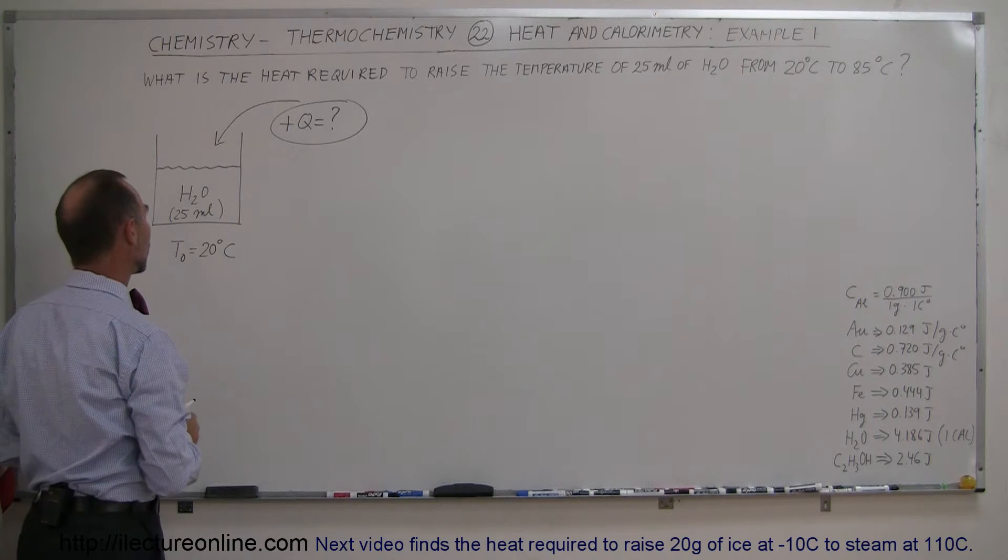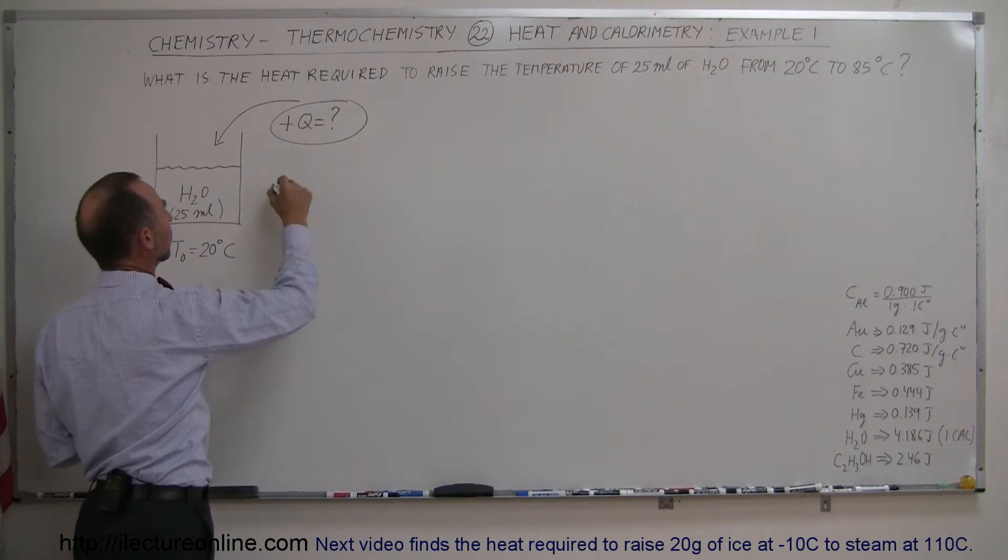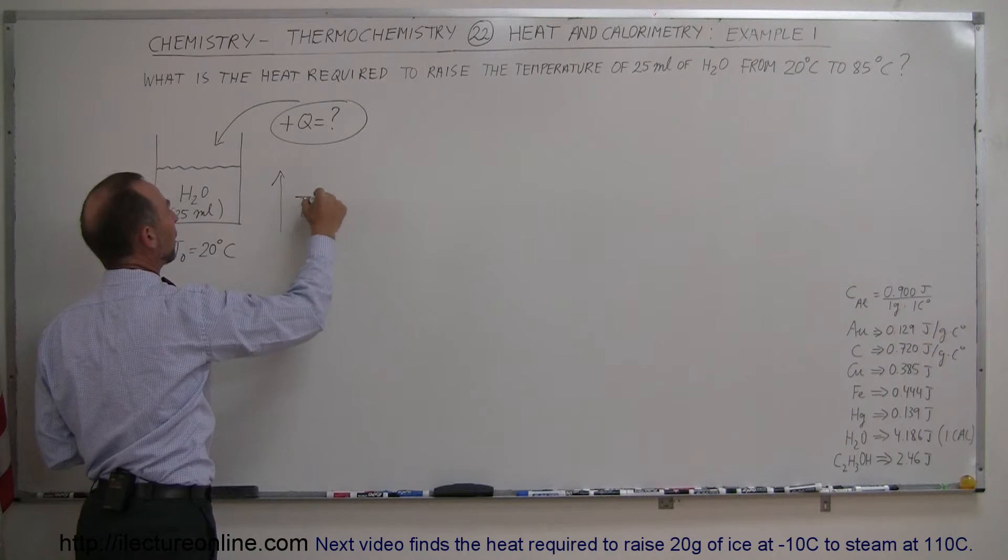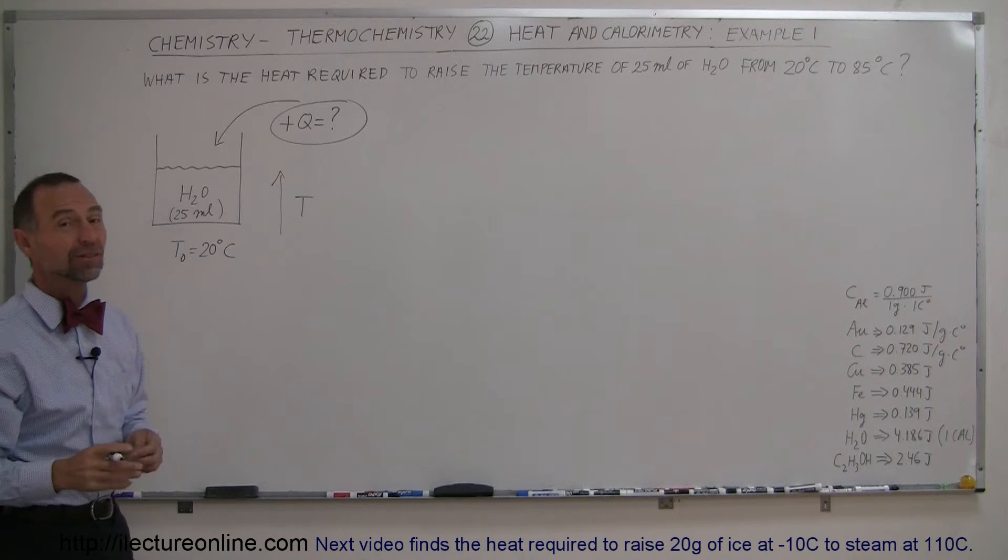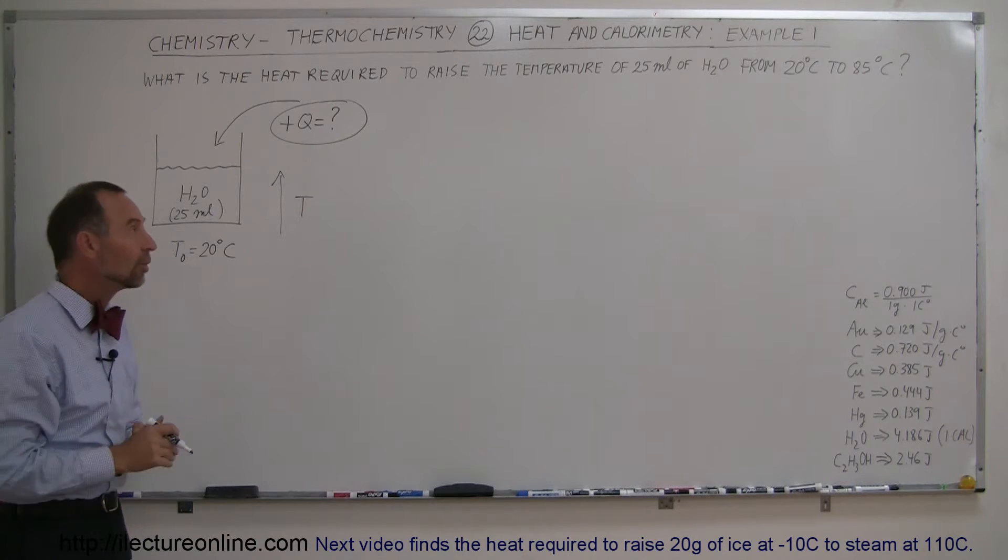Starting at an initial temperature of 20 degrees centigrade, we're going to add heat to it, so we're going to expect the temperature to go up, and the question is, how much heat do we have to add so that the temperature will go from 20 degrees centigrade to 85 degrees centigrade?